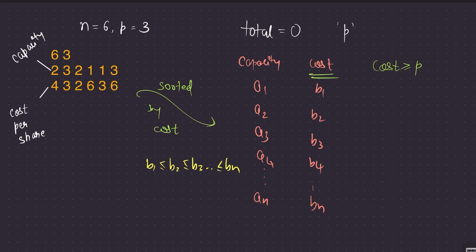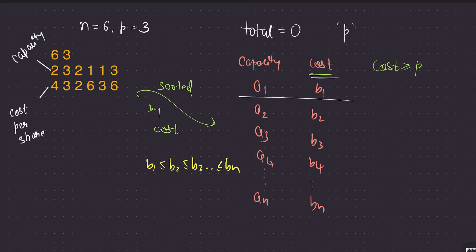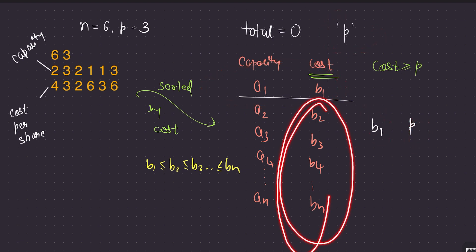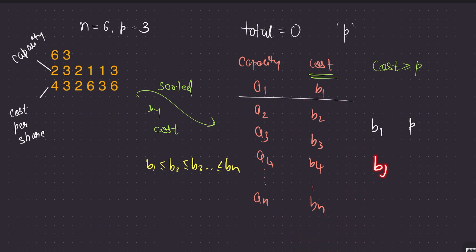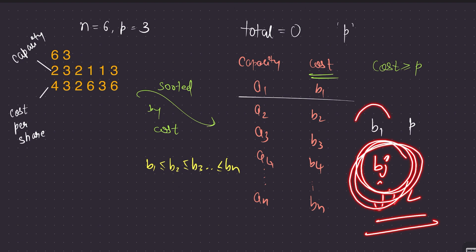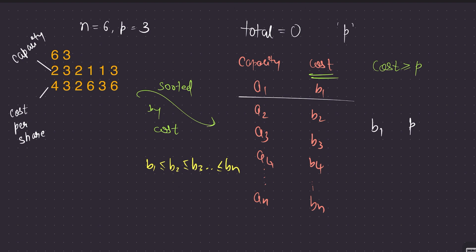If you pick resident B1, then in the next try you have two options: B1 and P. But if you had chosen any other resident B_j for j ≥ 2, you're definitely adding more cost since B_j > B1. You want to minimize the cost, so you want your candidate costs to be as small as possible. That's why choosing the resident with the lowest cost B1 makes sense.